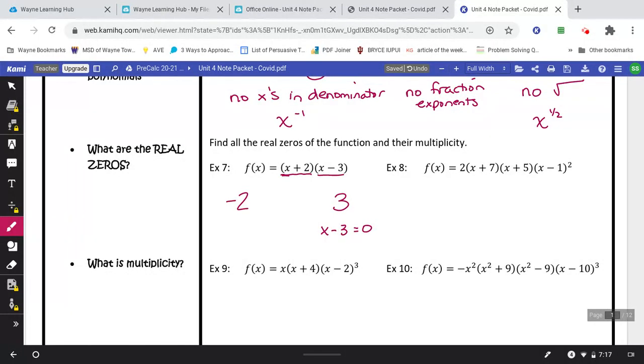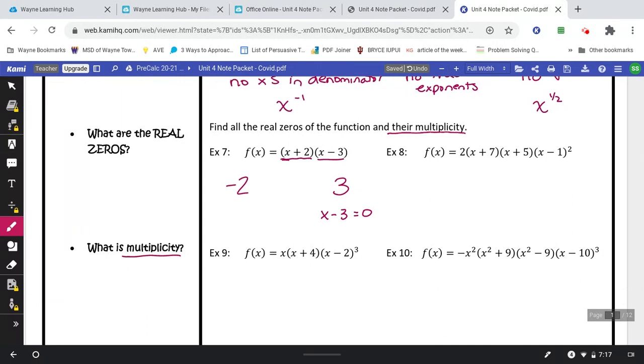Now the other thing is something called their multiplicity. So the multiplicity, that question down here, it's just really the size of each individual x. So the degree would be for the entire function, and the multiplicity is just for each individual piece. Example 7, it's a negative 2 for my real zero, and this has a multiplicity of 1. There's just 1x there. It's x to the first power. Same thing with this 3. Multiplicity of 1.